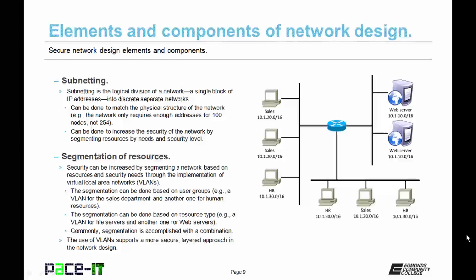Security can be increased by segmenting a network based on resources and security needs through the implementation of Virtual Local Area Networks, or VLANs. The segmentation can be done based on user groups — for example, a VLAN for the sales department and another for human resources — or based on resource type, such as a VLAN for file servers and another for web servers. Commonly, segmentation is accomplished with a combination of both user groups and resource type, supporting a more secure, layered approach in network design.